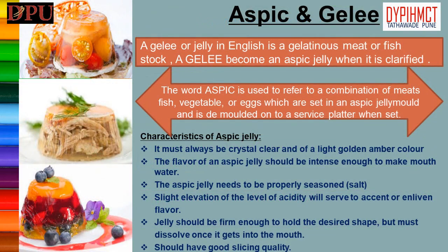Aspic and jelly. A jelly in English is a gelatinous meat or fish stock. A jelly becomes an aspic jelly when it is clarified. The word 'aspic' is used to refer to a combination of meats, fish, vegetables, or eggs which are set in an aspic jelly mold. It is demolded onto a service platter when set and served.